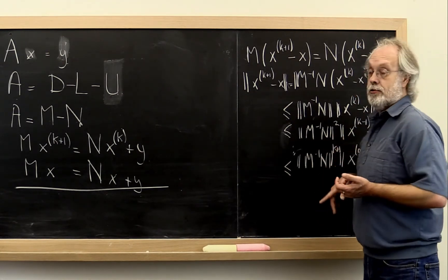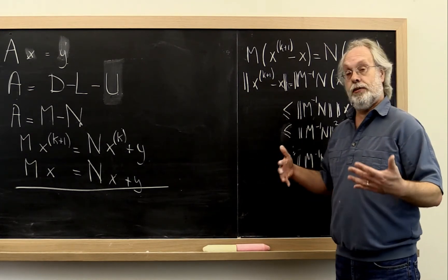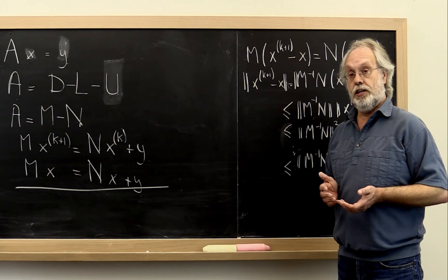And therefore this right here becomes zero. And then actually you end up converging in one step, one iteration.